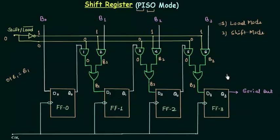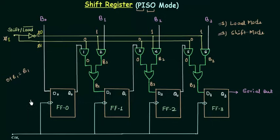Next we want the serial movement of the data — from flip flop number 0 to flip flop number 1, then from 1 to 2 and then 2 to 3. The data stored in flip flop number 3 we want as the output. This is our second aim and it can be achieved by the shift mode. During the shift mode we change the input from 0 to 1, and because of this we will have 0 here and 1 at this point. The inputs to the AND gates also switch: we have 1 as the first input to gate number 1, and similarly 1 for gate numbers 3 and 5, and 0 for gate numbers 2, 4 and 6.